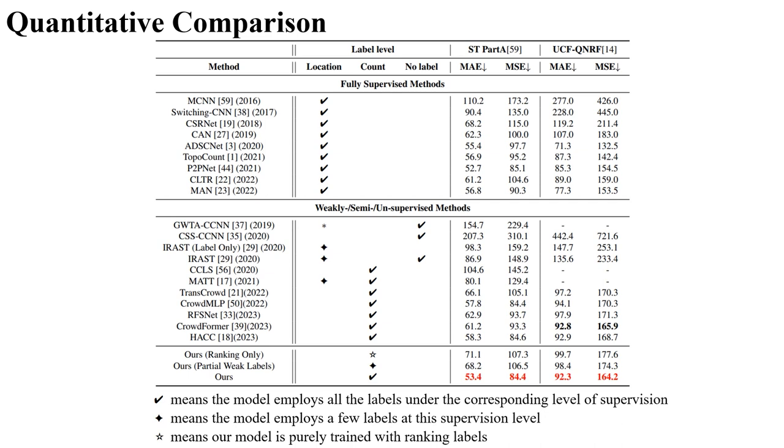As shown in this table, we can see that our model trained with ranking only shows promising results compared to other methods. This demonstrates that these flexible and achievable annotations are practical in crowd counting. The additional 50 samples can boost the counting accuracy. When compared with other weakly supervised methods, such as CrowdMLP and Hack, with the same amount of weak training data, the performance of ours is the best in the weakly supervised setting on MAE and MSE, and even close to location-level baseline MAN.